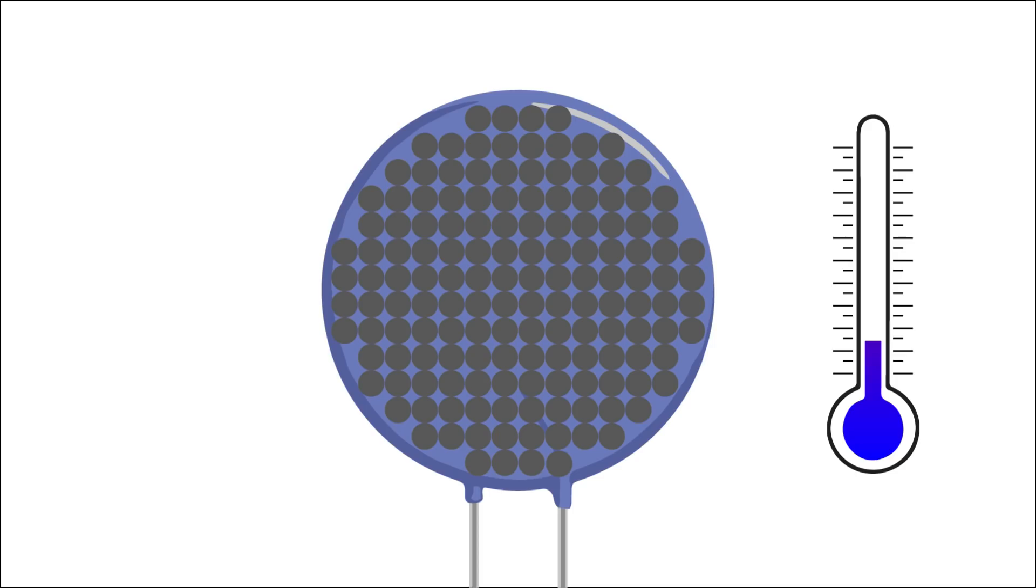The second type, polymer PTCs, are called resettable fuses. They're made of a slice of plastic embedded with carbon grains. At room temperature, the carbon grains are in close contact with each other, forming a conductive path through the device.